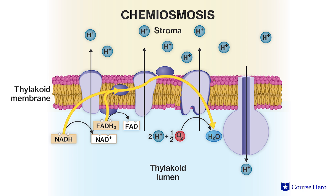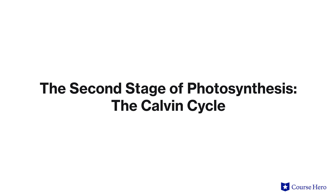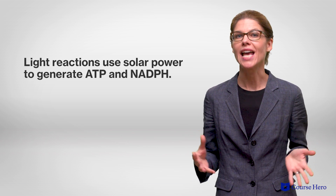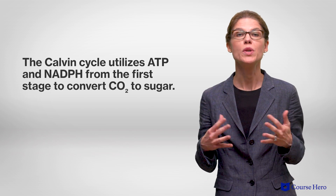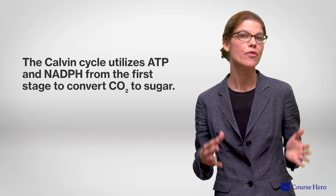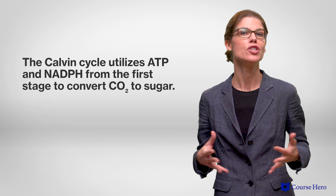Hydrogen ions diffuse down the concentration gradient, and this is coupled by ATP synthase to the phosphorylation of ADP, resulting in ATP synthesis. So to summarize, the light reactions use solar power to generate ATP and NADPH. We're now ready to look at the light-independent reactions of photosynthesis — the Calvin cycle — which utilizes ATP and NADPH from the first stage to convert carbon dioxide to sugar.